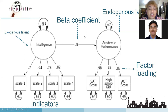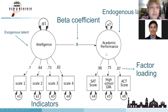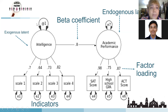For example, SAT score, high school GPA, and ACT score are good indicators of academic performance. The academic performance latent is measured by these three, and these three are a good representation of that latent variable. The connection between one latent and another latent is called the beta coefficient — the same as beta in multiple linear regression.